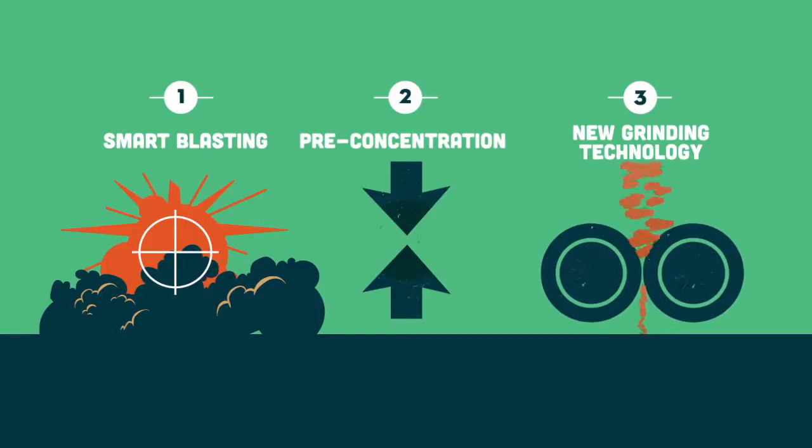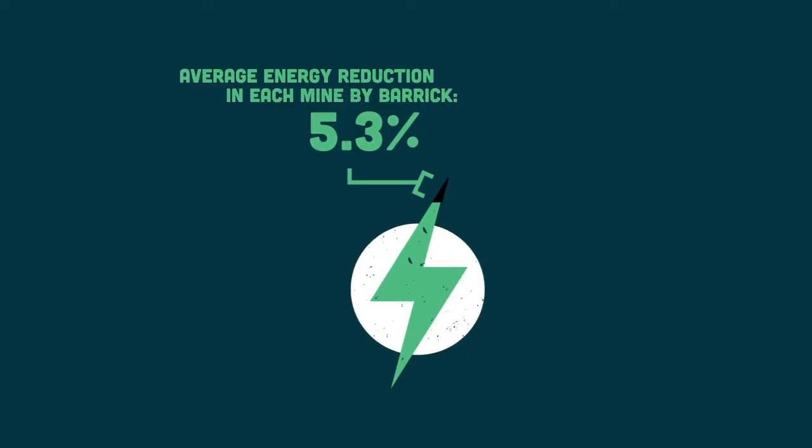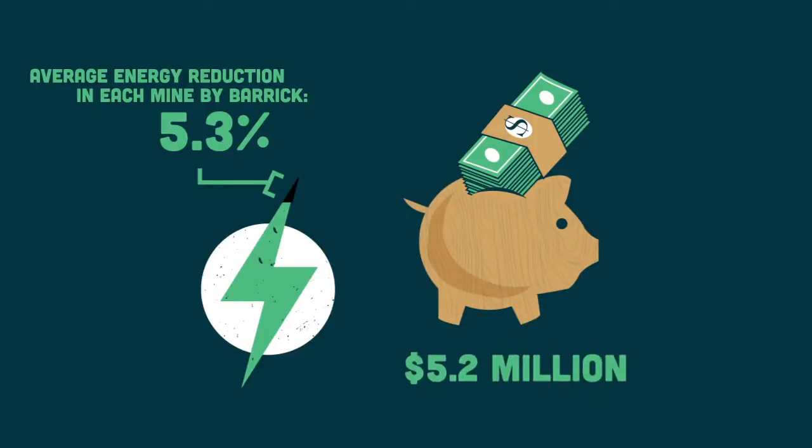Leading mining companies are moving forward to more efficient comminution strategies. Barrick Gold, for example, improved its comminution processes at three mine sites, resulting in $5.2 million in annual savings.